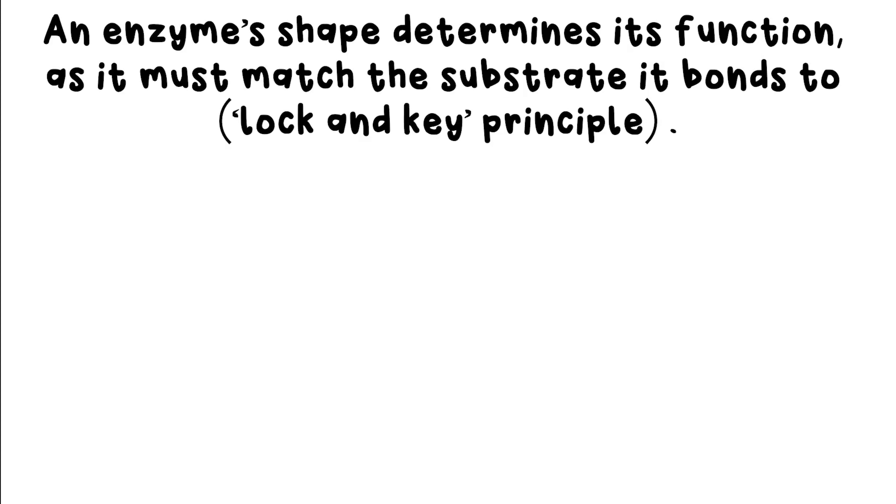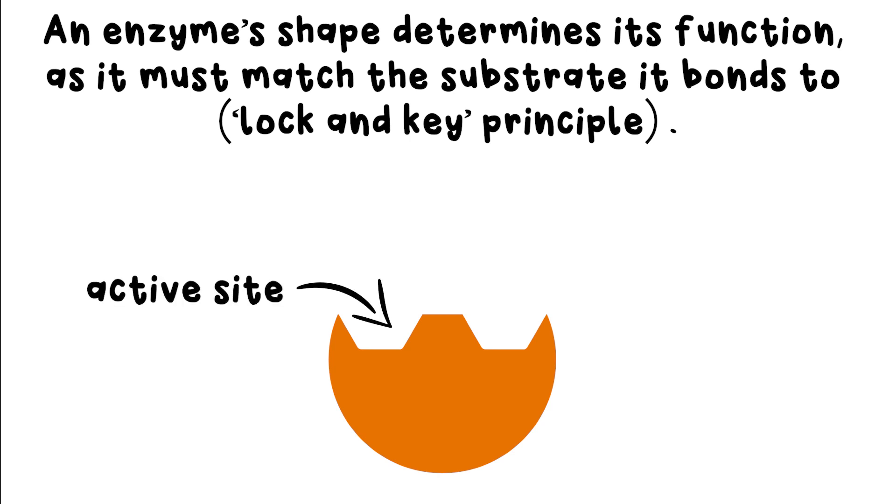It's all to do with their shape. Enzymes work on a lock and key principle. The molecule to be broken down—we call this the substrate—has a particular shape, just like a key. If it's to be broken down, the enzyme's active site, that's just the part of the enzyme where the business takes place, must be the right shape, just like a lock. If they don't match, nothing will happen.